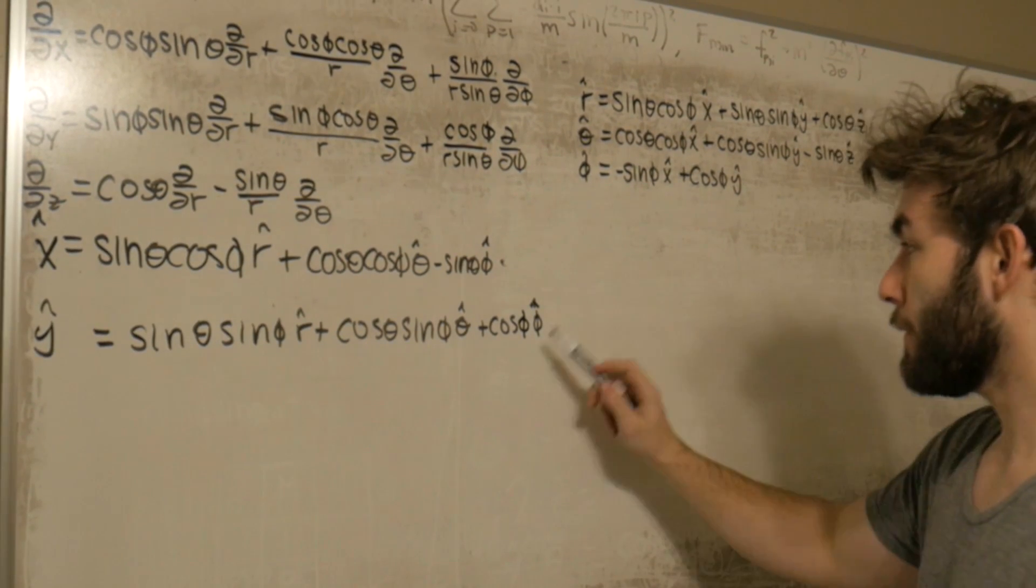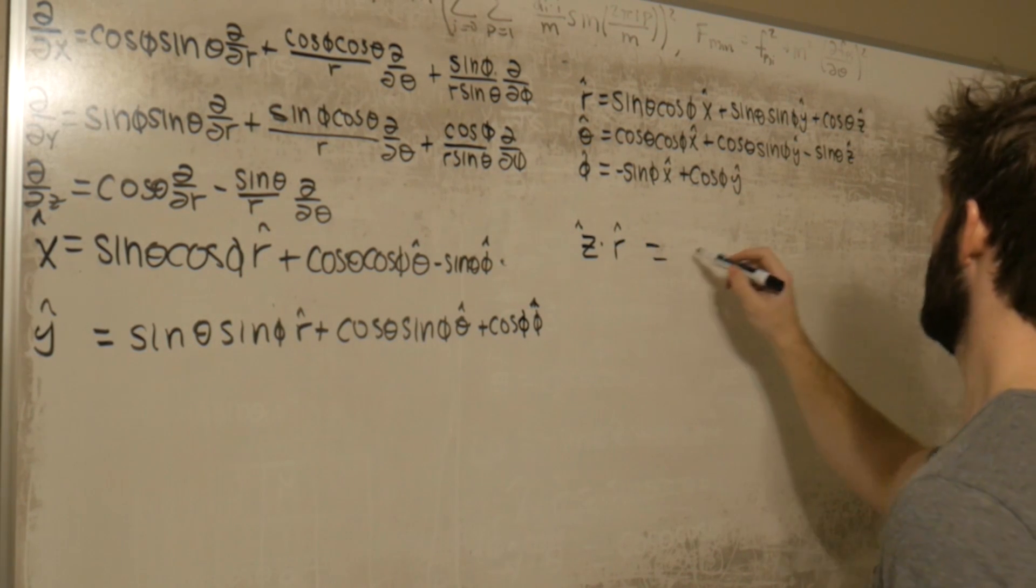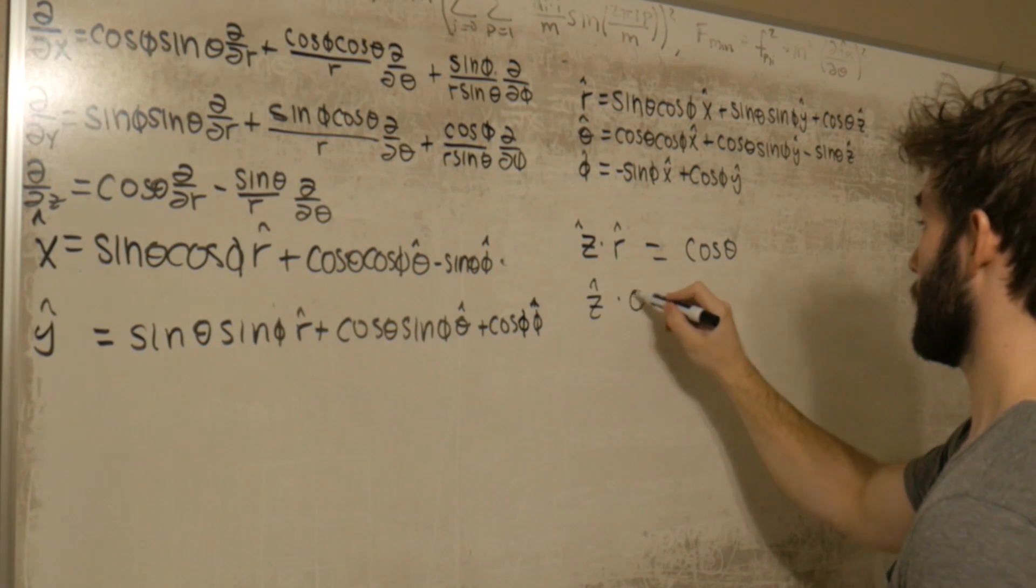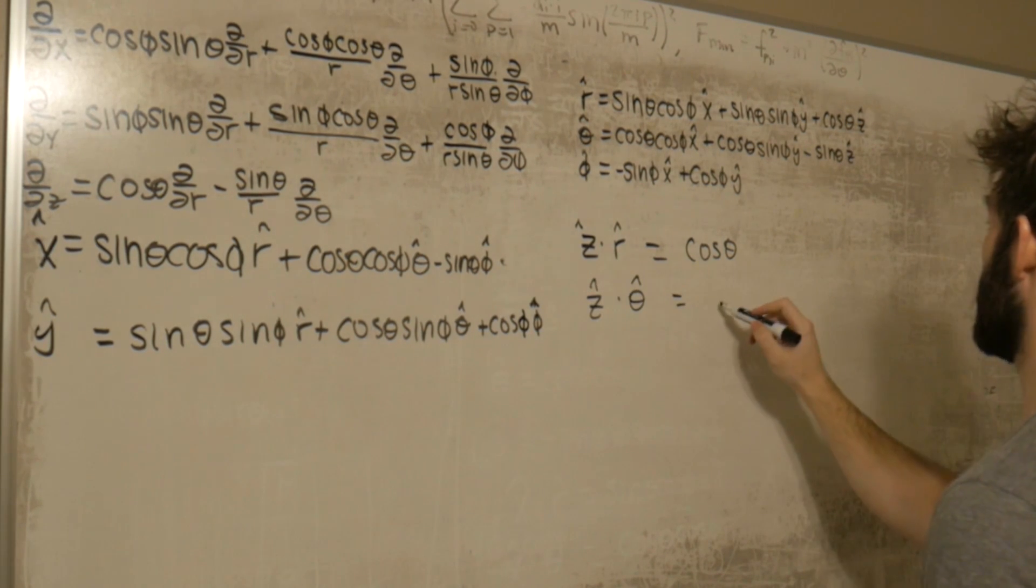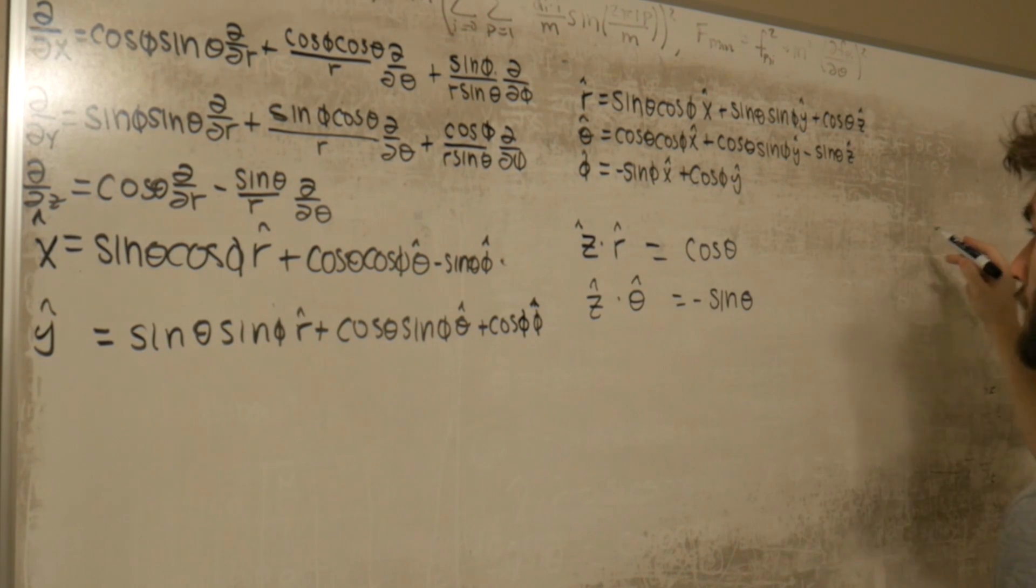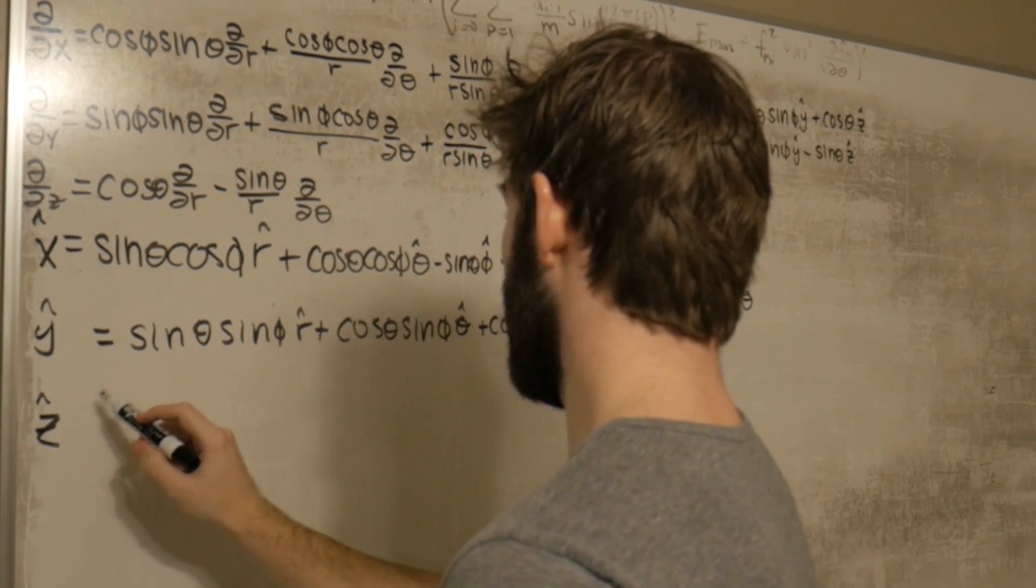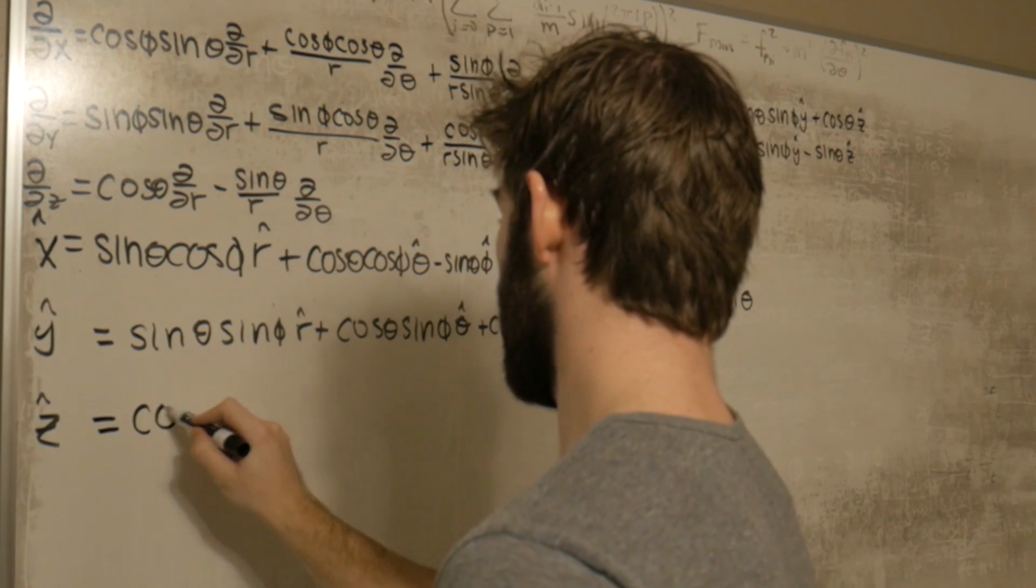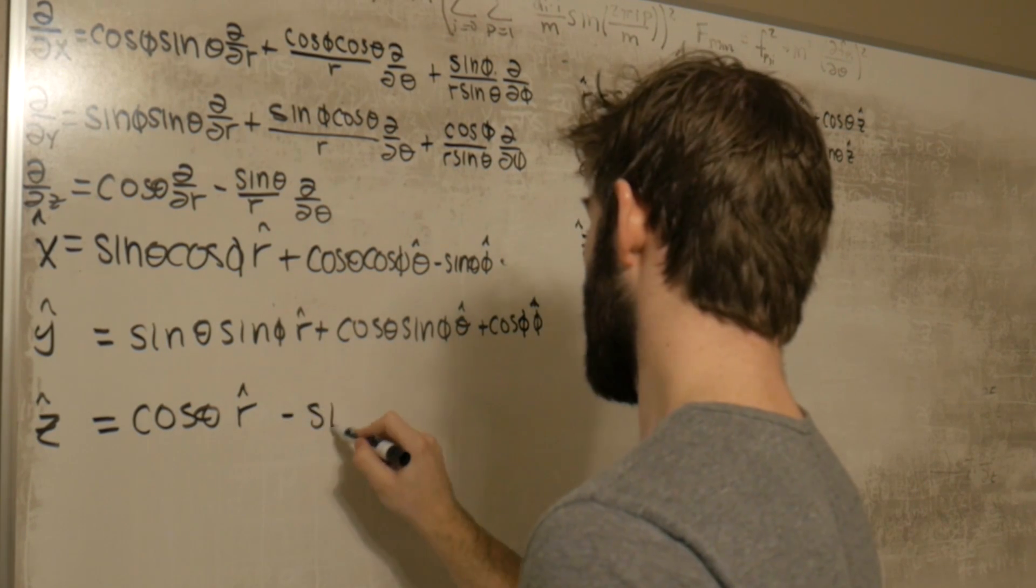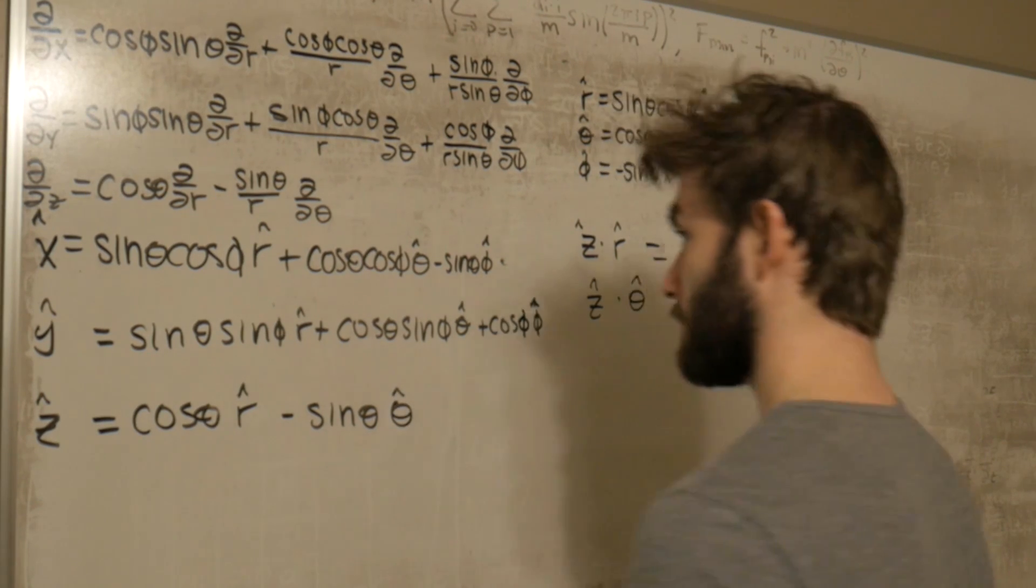And that last term that was there was actually a phi, not a theta. But moving on to z hat, we're going to do z hat dot r hat. And the only thing that's going to survive is cosine theta. Z hat dot theta hat is just going to spit us out minus sine theta. You'll notice that there's no z component of the phi direction, which gives us a final unit vector converting to Cartesian being cosine theta r hat minus sine theta theta hat.